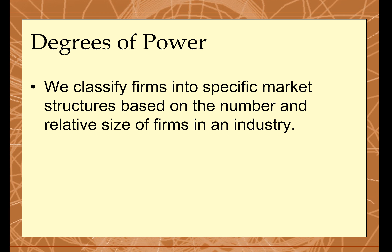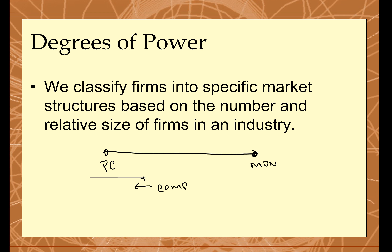We classify firms into specific market structures. At one end of the spectrum we have perfect competition, and at the other end we have monopoly. This spectrum measures the level of competition — moving toward perfect competition means competition increases, and moving toward monopoly means it decreases. Any industry positioned to the right of perfect competition has some degree of market power.